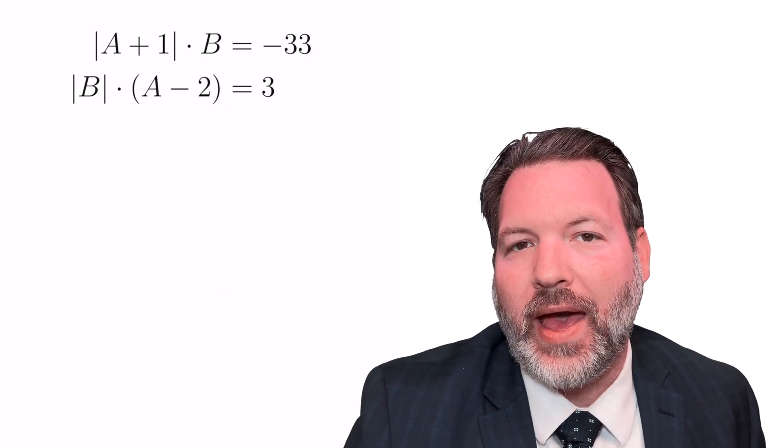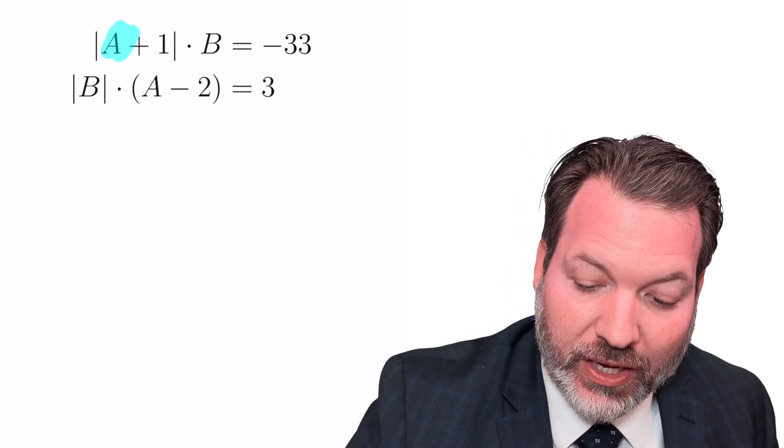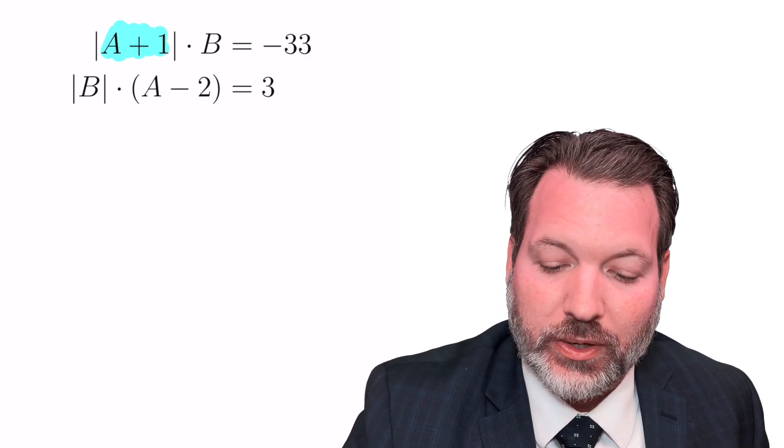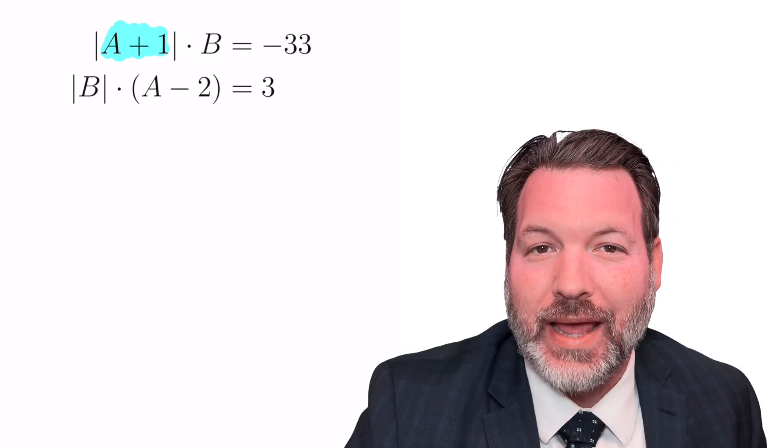The second thing to keep in mind is what we call casework. When we solve absolute value equations, we need to consider those two different cases. What if the thing inside the absolute value bars is positive, is to the right of zero on the number line? But what if it's negative?